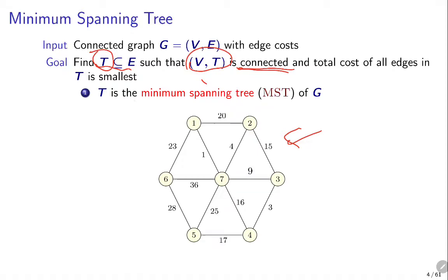This set T, this set of edges, forms the so-called minimum spanning tree, which is unique when the weights are unique, and we would like to compute it. That's our task for today. Here's a drawing of this MST in this case.